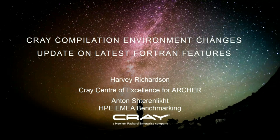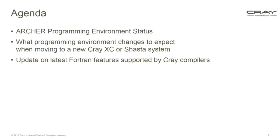What I'm going to do is describe the latest compilation development environment you'd have on a Cray XC system today. There's a bit of complexity with Archer because the environment's a bit behind, and I'll explain that. This will give some hints about things you might see on Archer 2, though this isn't intended to be an introduction to Archer 2. I'll also cover how the Cray Fortran compilers have developed in supporting the latest features, specifically from Fortran 2018.